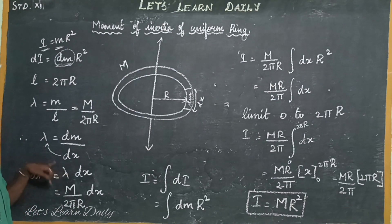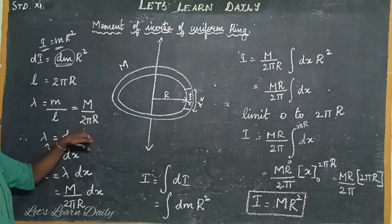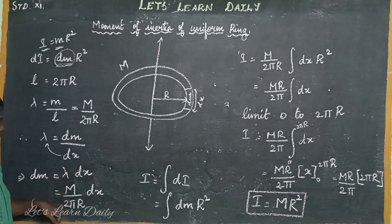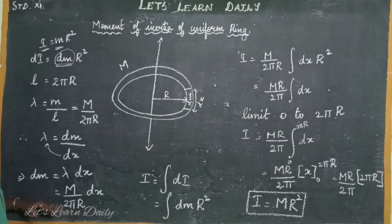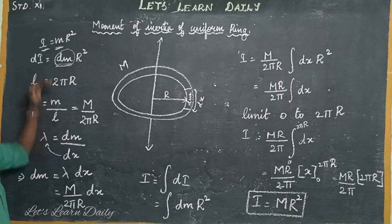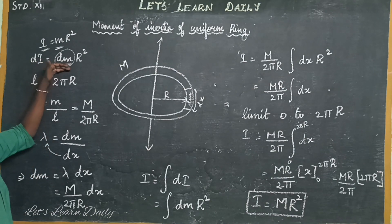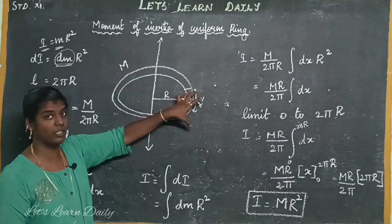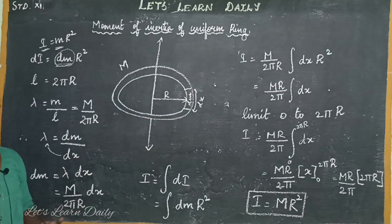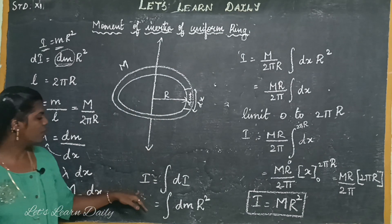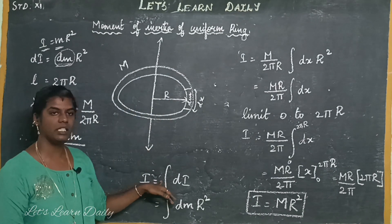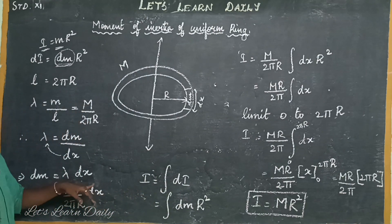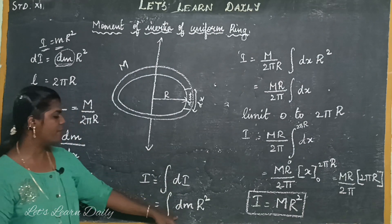So this is the value of lambda times dx. So this gives us the value of dm. If we use this method, we will integrate it. Let's integrate the moment of inertia of the object. So I equals the integral of dI. dI equals dm times r squared.